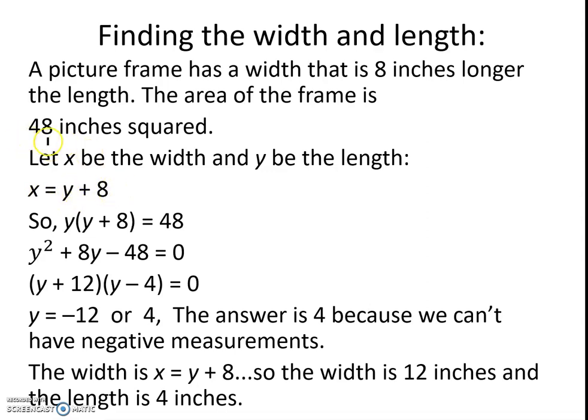We also know that the area is 48, and we know that for a rectangle, we find area taking the side times the side, or the width times the length. So we have y times y plus 8 equaling 48. Going ahead and distributing that y to the y plus 8, we find it's y squared, and then y times that positive 8 is positive 8y.